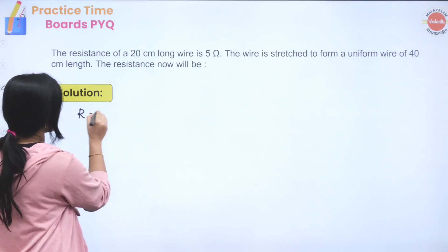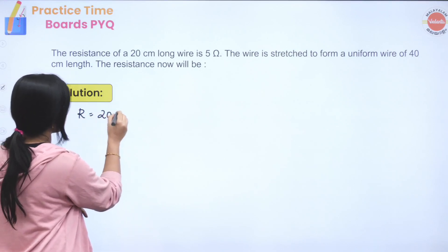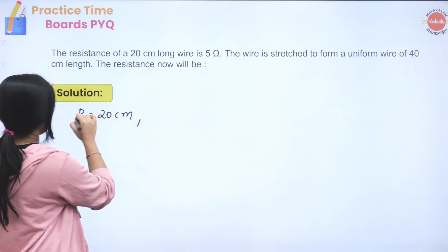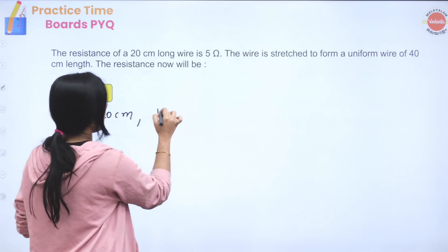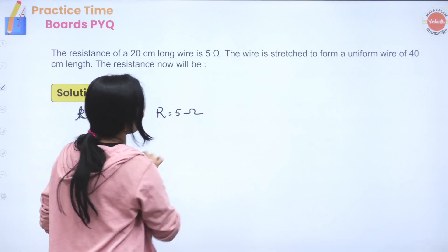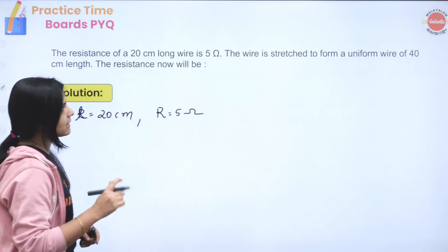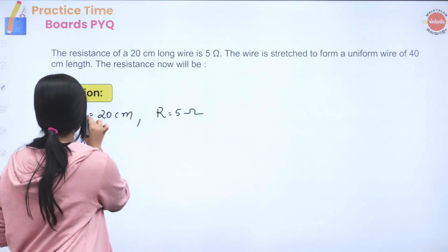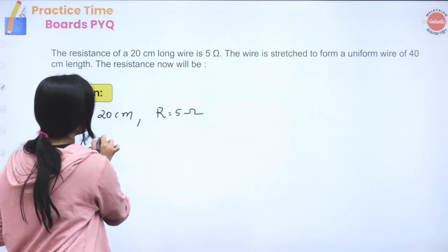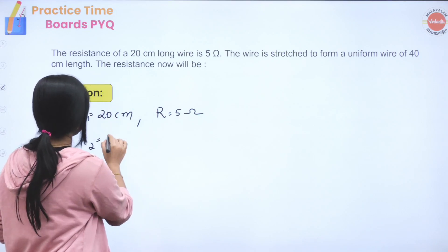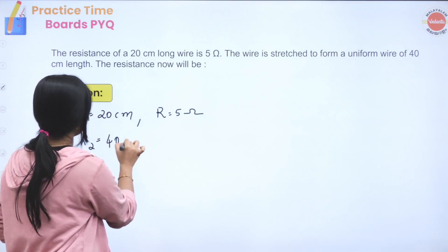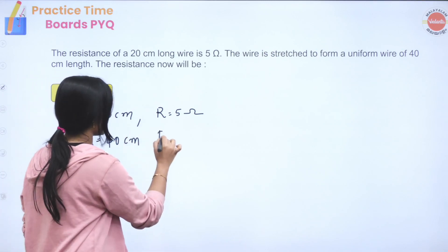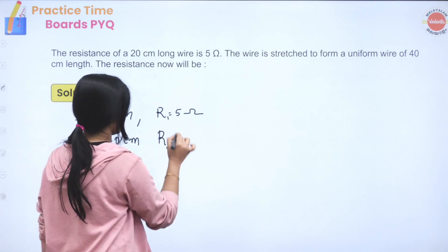The length is 20 cm and resistance is 5 ohm. The wire is stretched to form a uniform wire. So the original length L1 is 20 cm and the new length L2 is 40 cm. We need to find R2.